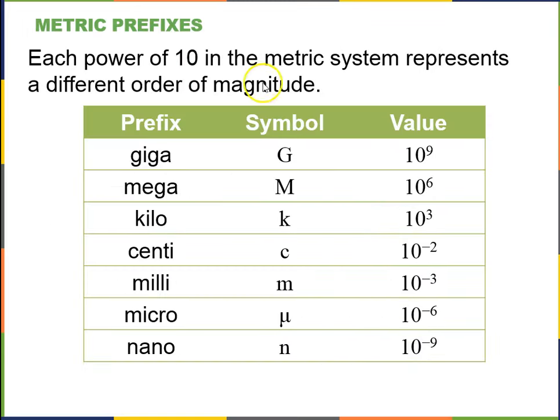Metric prefixes. So each power of 10 in this metric system represents a different order of magnitude. So capital G stands for giga, which means 10 to the power of 9. Capital M stands for mega. Capital K stands for kilo, which is 1,000. So you may have heard of these in terms of kilobytes, megabytes, gigabytes.